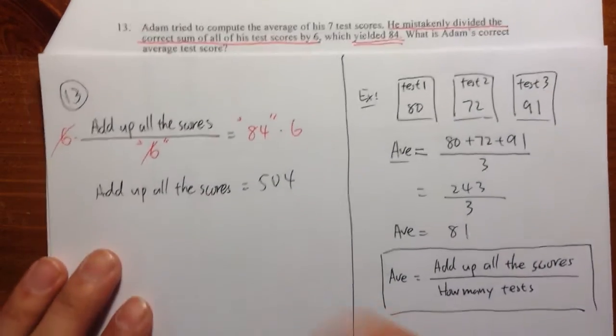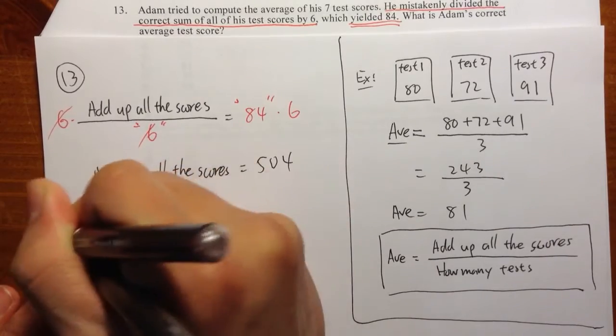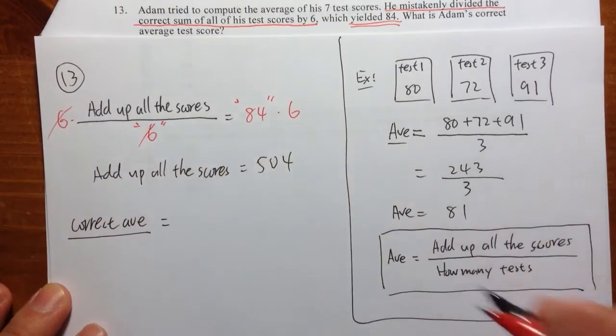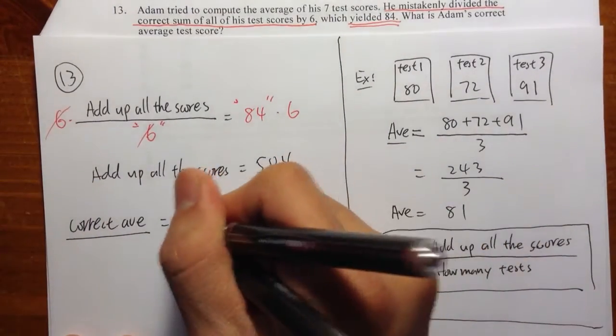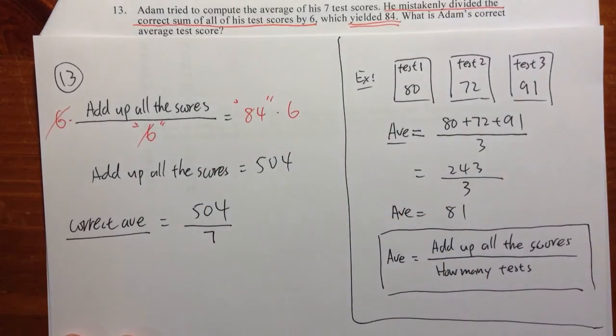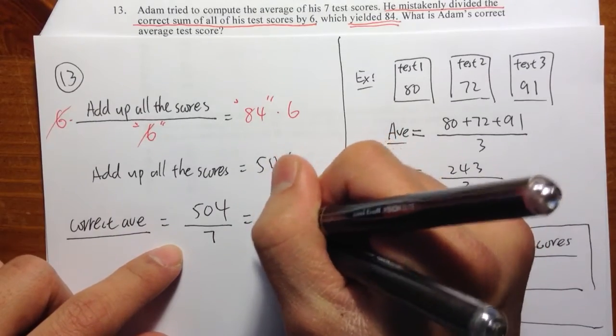So I will do it this way. The correct average. The correct sum is 504. And he should have divided by 7 instead. By 7. So 504 divided by 7 is 72.